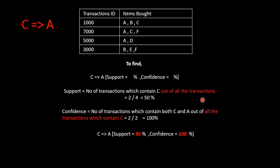Now we are going to analyze what is the case when we have C implying A. The dataset remains the same; the formula almost remains the same with mild changes in what we treat as numerator and denominator. Let us calculate the support — number of transactions which contain C out of all transactions. ABC has got C, ACF has got C, AD has no C, BEF has no C. So we have 2 transactions out of 4 which have C, giving us 2 by 4, which is 50 percent.